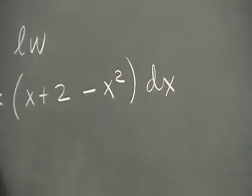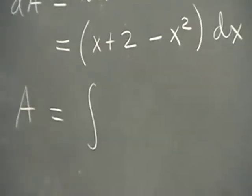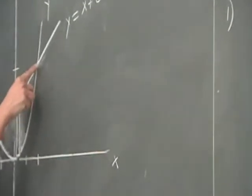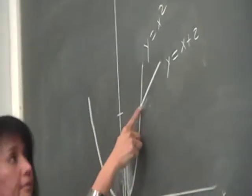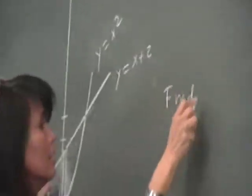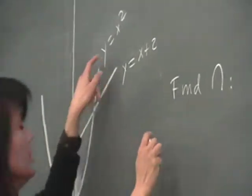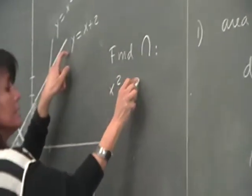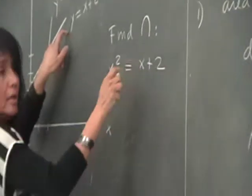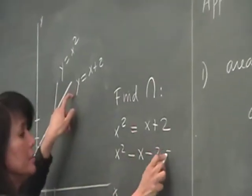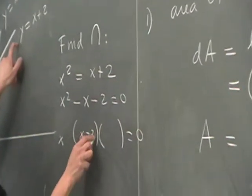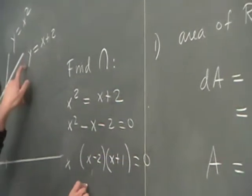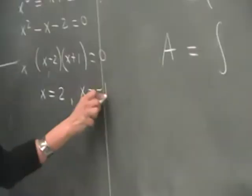To integrate, we need to find the points of intersection of the two curves. We equate the y-values: x squared equals x plus 2. Then x squared minus x minus 2 equals 0. Factoring gives (x minus 2)(x plus 1) equals 0, so x equals 2 or x equals negative 1.